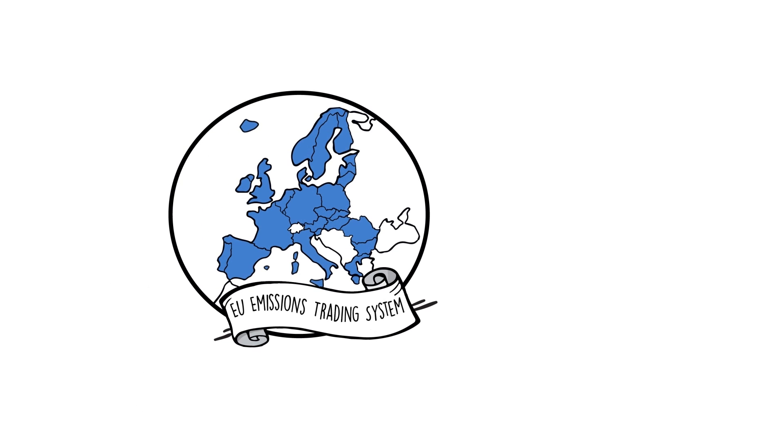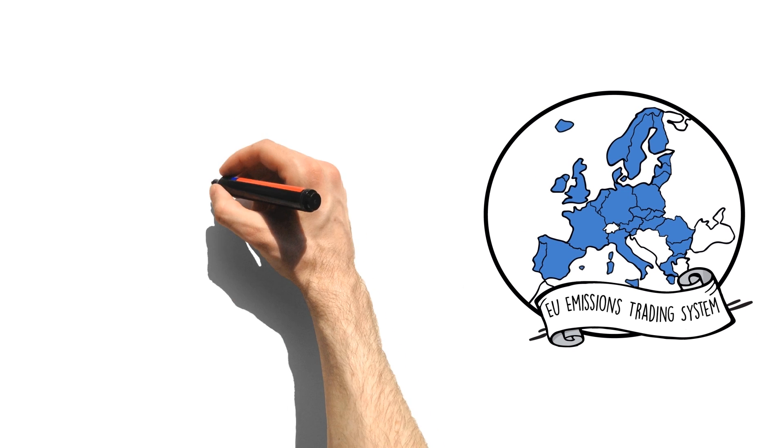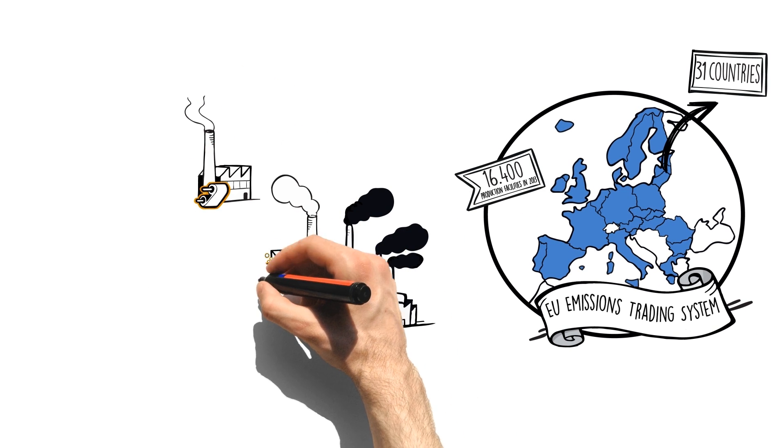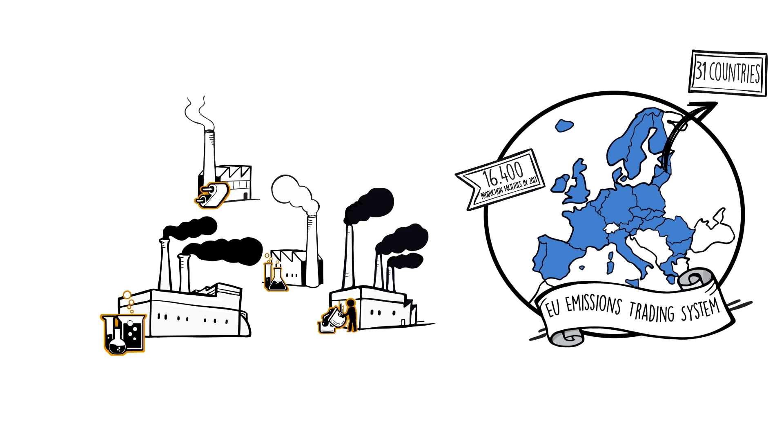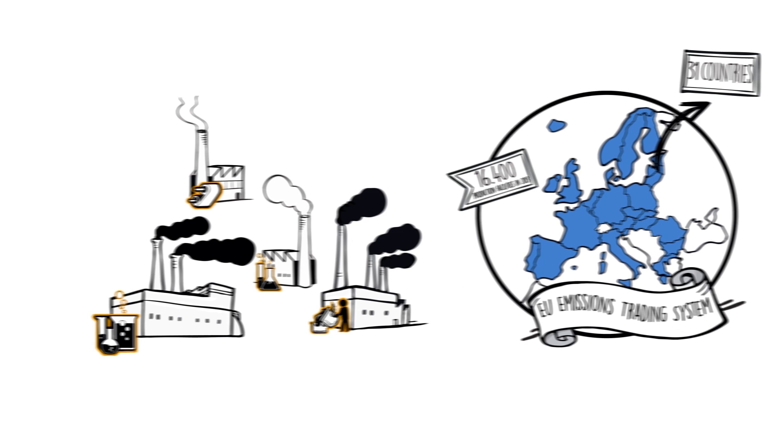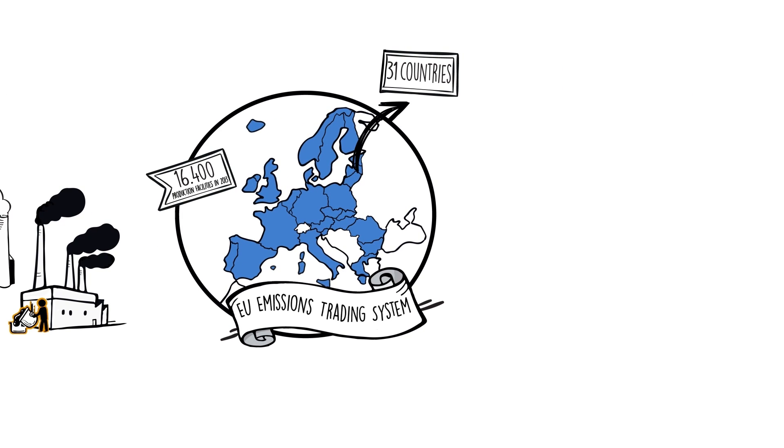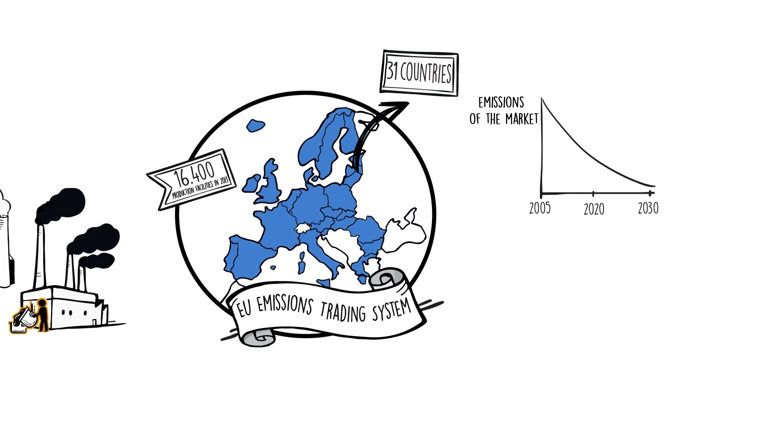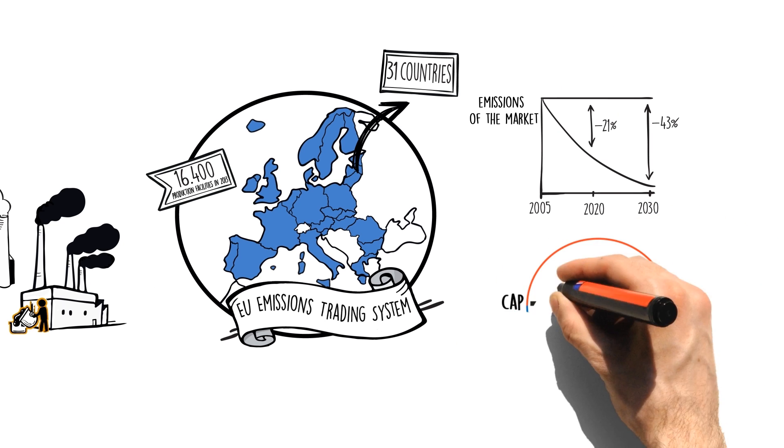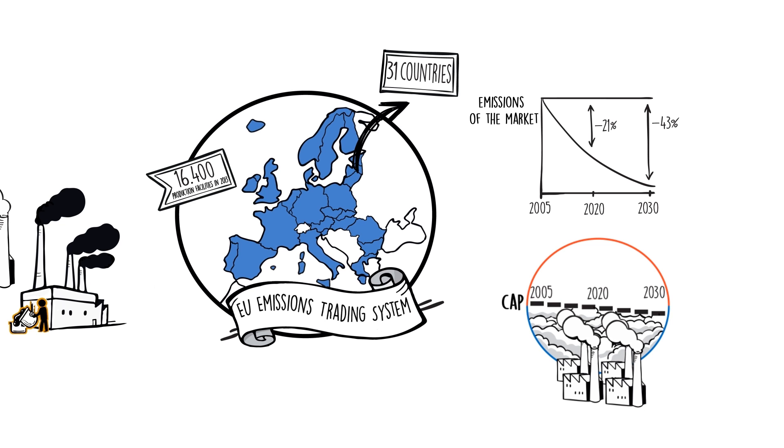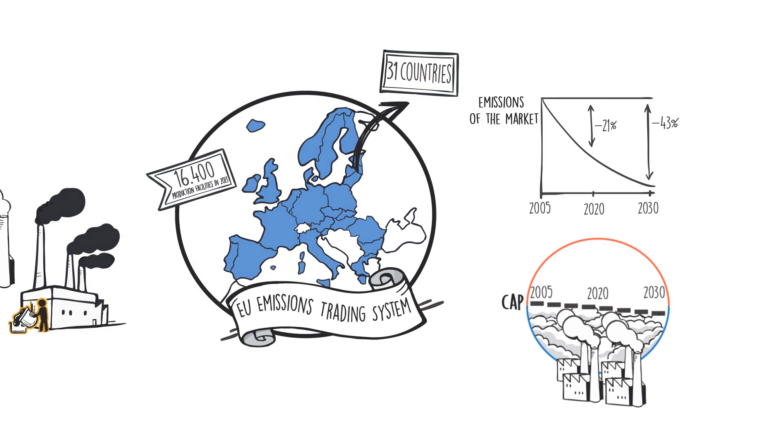The European carbon market covers almost 50% of European CO2 emissions and includes almost 16,400 of the most polluting production facilities in the energy and industrial sectors. By 2020, the target is to reduce greenhouse gas emissions by 21% compared to 2005 and by 43% by 2030. This will be achieved by setting an emissions cap which will be lowered each year until 2030.